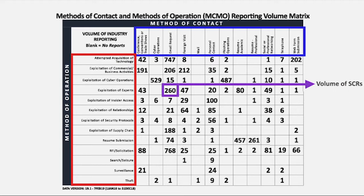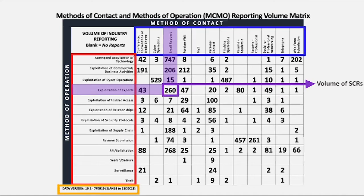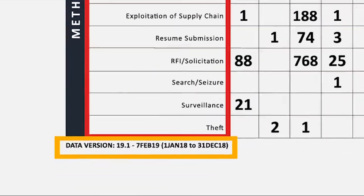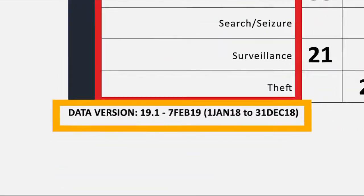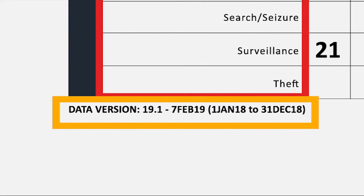For example, between 1 January 2018 and 31 December 2018, there were 260 suspicious contact reports — or SCRs — where an actor employed an email request (the method of contact) to attempt the exploitation of experts (the method of operation). Highlighted by the orange box is the data version number and the time frame the data represents. In this example, the version is 19.1, encompassing SCRs reported between 1 January 2018 and 31 December 2018.